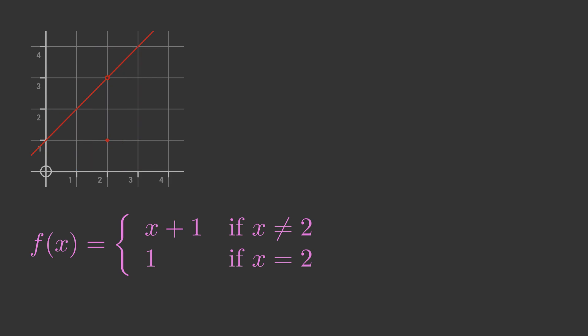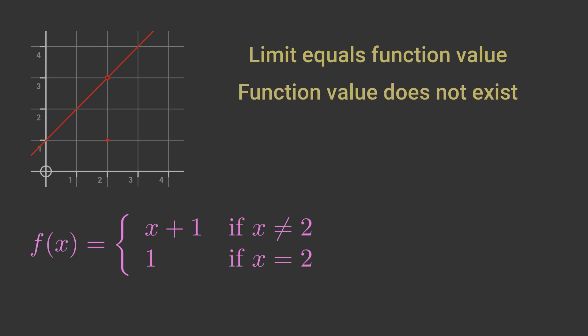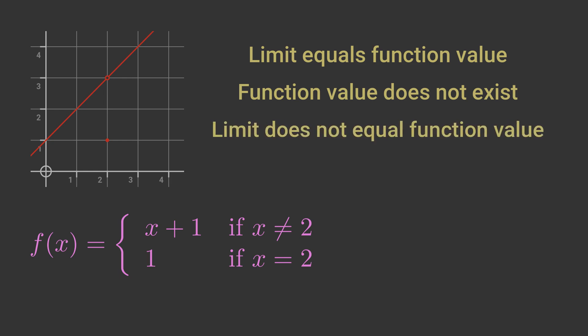Let's summarise the three situations we have met so far. A function might have a limit at a particular point that is equal to the value of the function at that point; or it might have a limit at a point but the function itself is undefined at that point; or it might have a limit at a point but the function has a different value at that point.